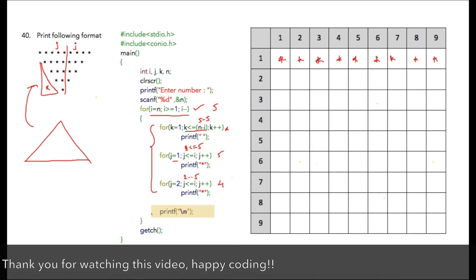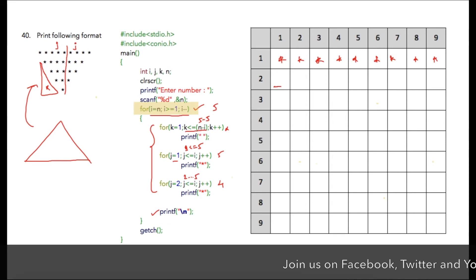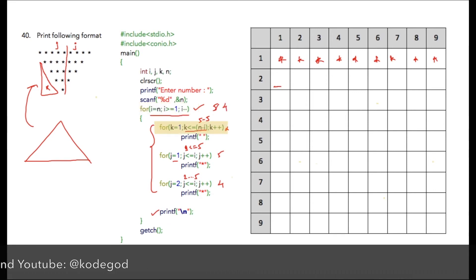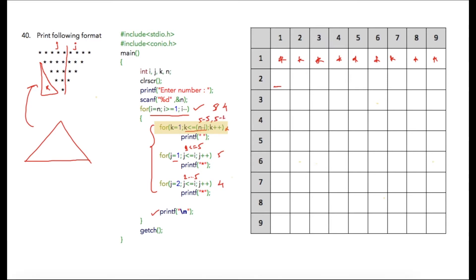Because of the printf newline, the cursor will move to the next location. In the next iteration, value of i will be decremented to 4, so the condition will be 5 minus 4, meaning one space will be printed. Then the second for loop runs from 1 to 4, printing 4 stars, and the third part gives 3 iterations, printing 3 stars. Then the cursor moves to the next line.